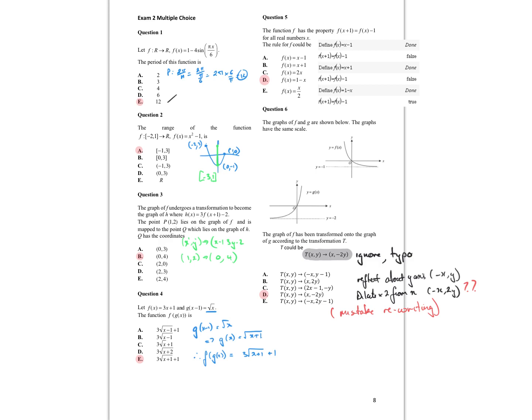The range of the function — do a quick graph sketch. I've got the graph of x squared minus 1. With the domain restriction, make sure you sketch it, and you can see that the minimum value is at negative 1, and up here we have the point negative 2, 3.